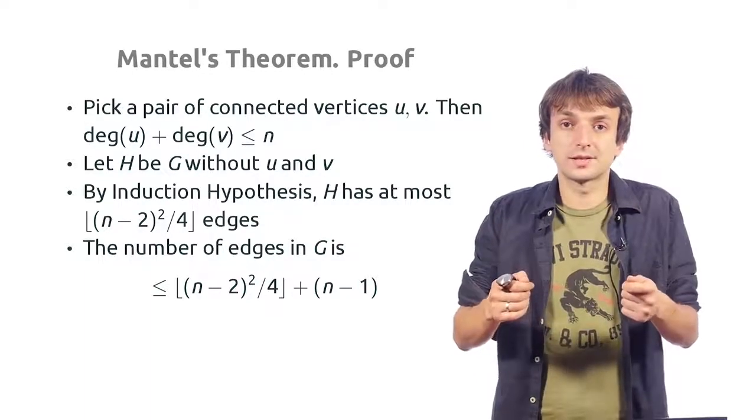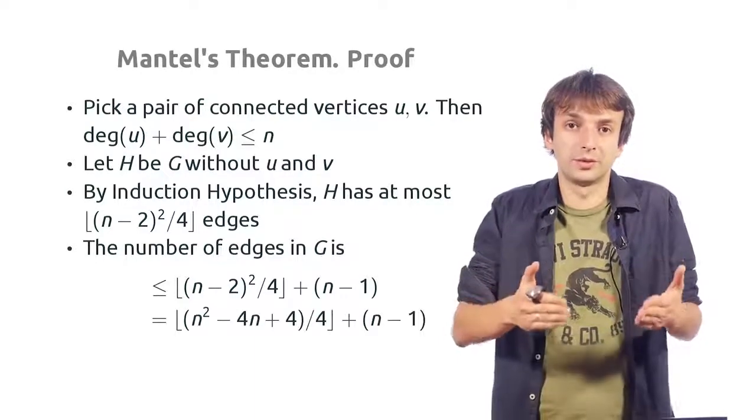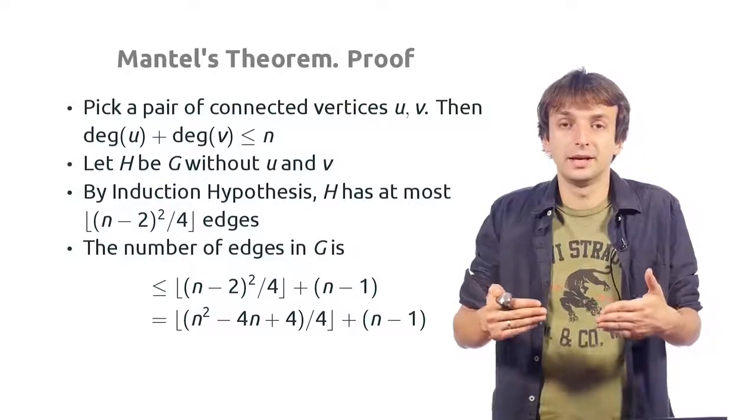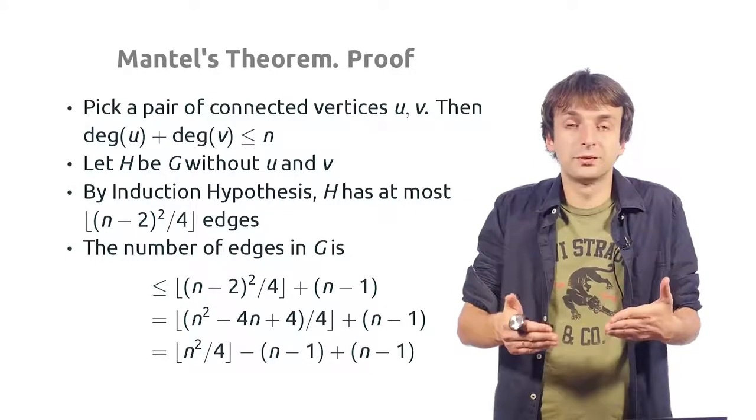Now, we just simplify the expression n minus 2 squared. We know it's n squared minus 4n plus 4. And when you divide minus 4n plus 4 by 4, you get the following expression.